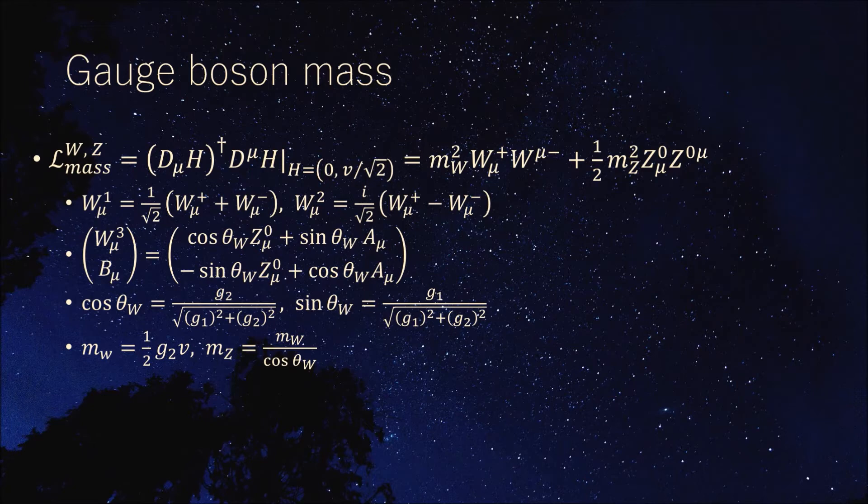The gauge field A has no mass term and remains at zero mass. As expected from this, A is a gauge field corresponding to photons. If the gauge symmetry is not broken, the gauge field has no mass. Therefore, the SU2 cross U1Y gauge symmetry is broken to U1EM.